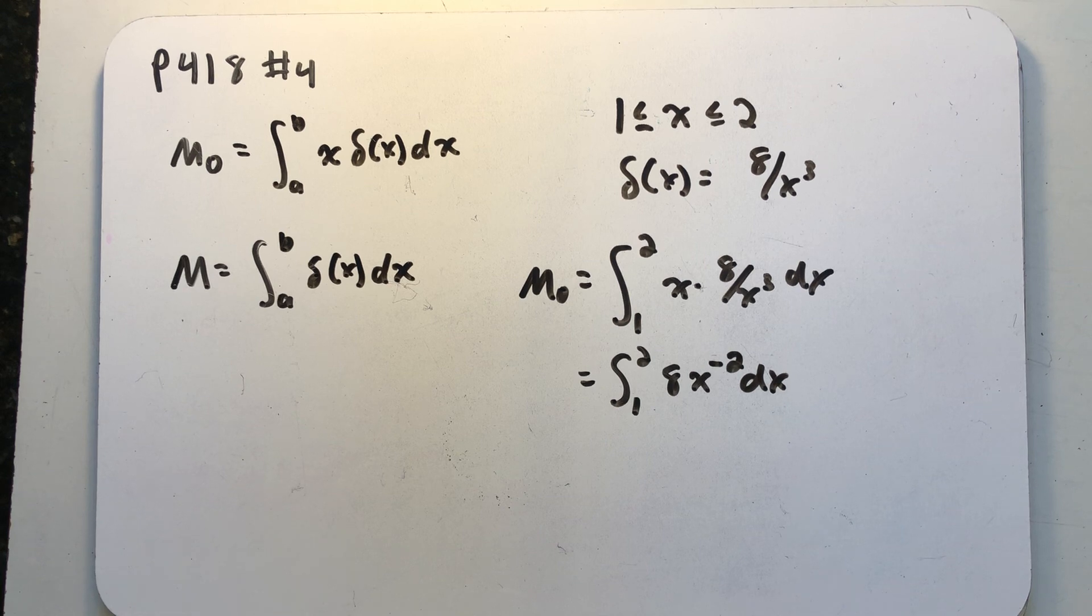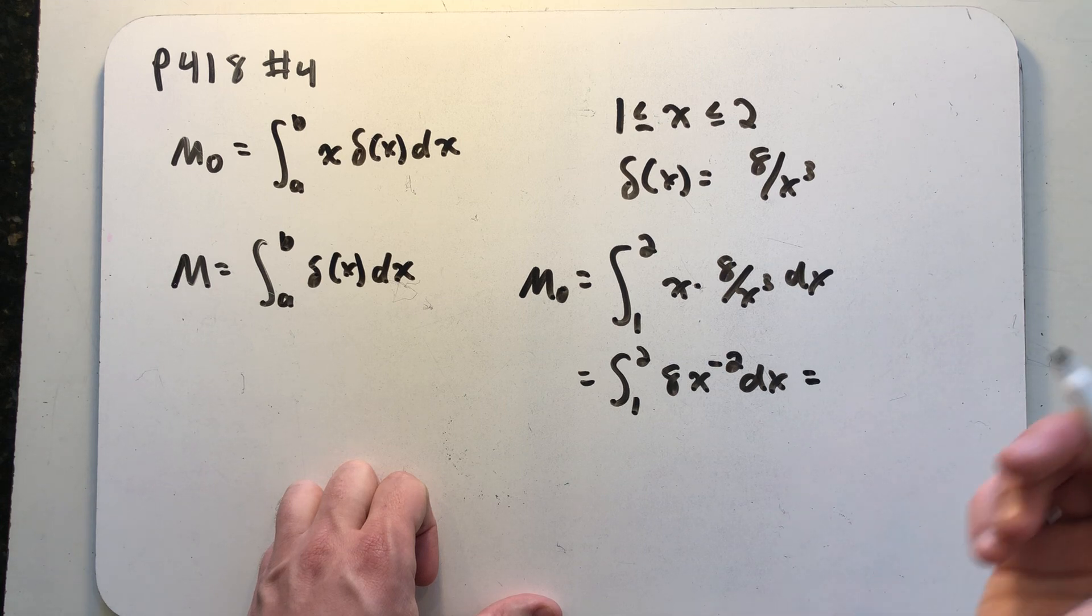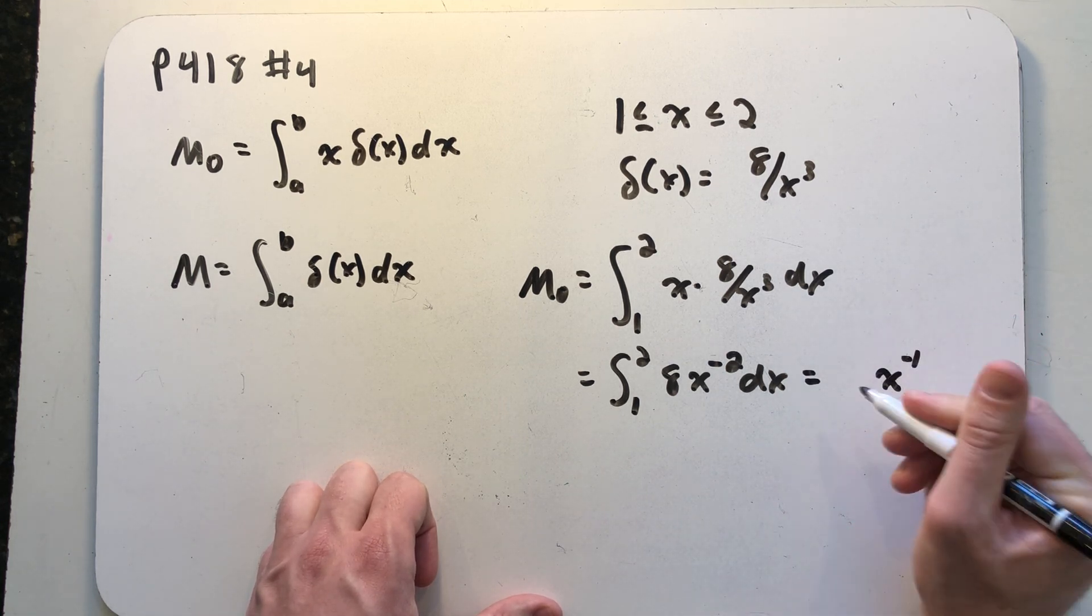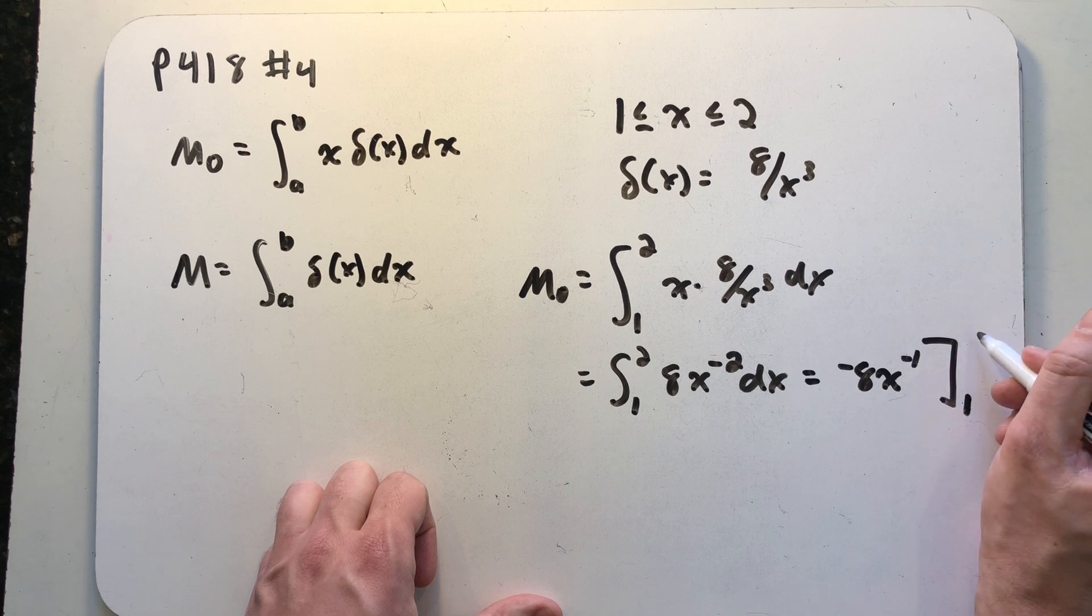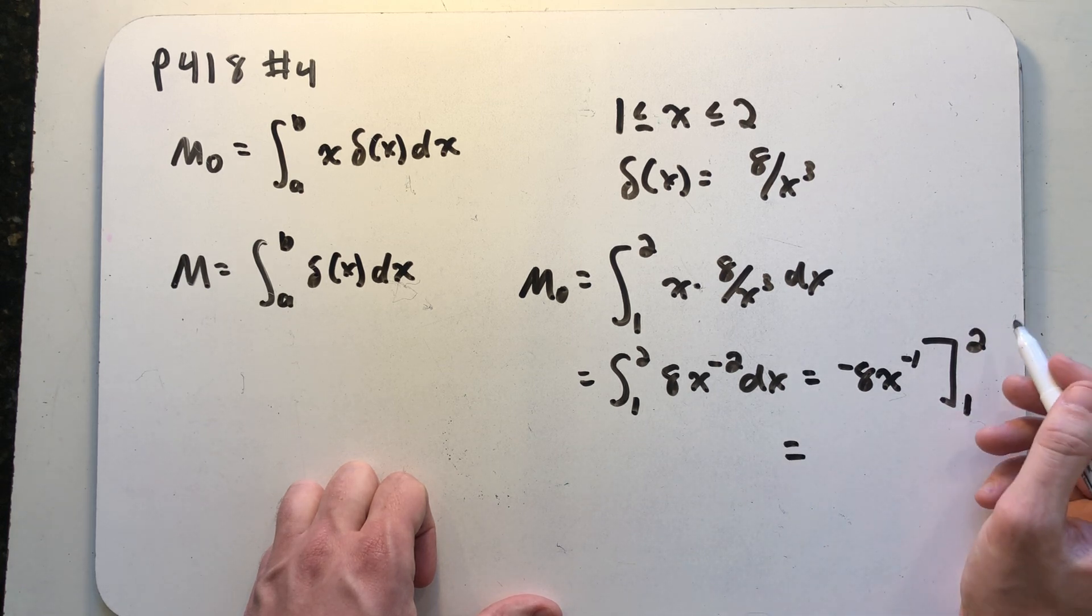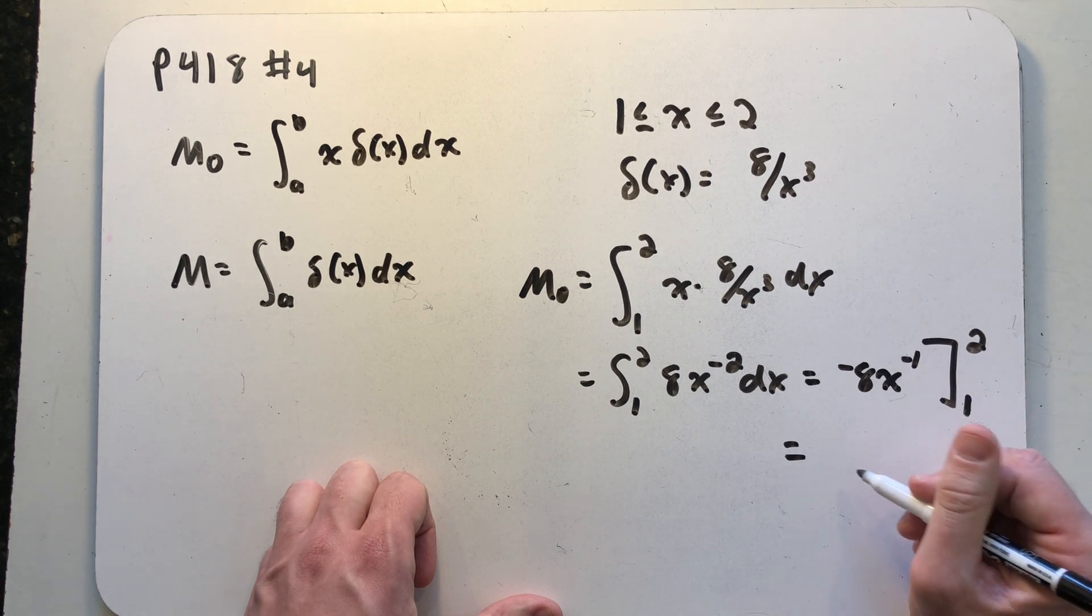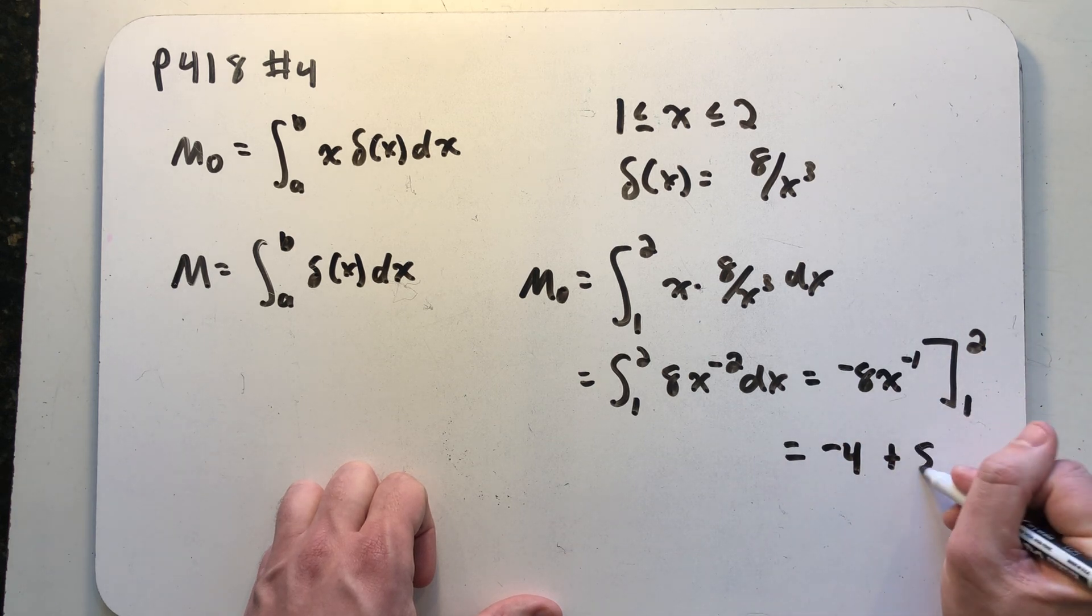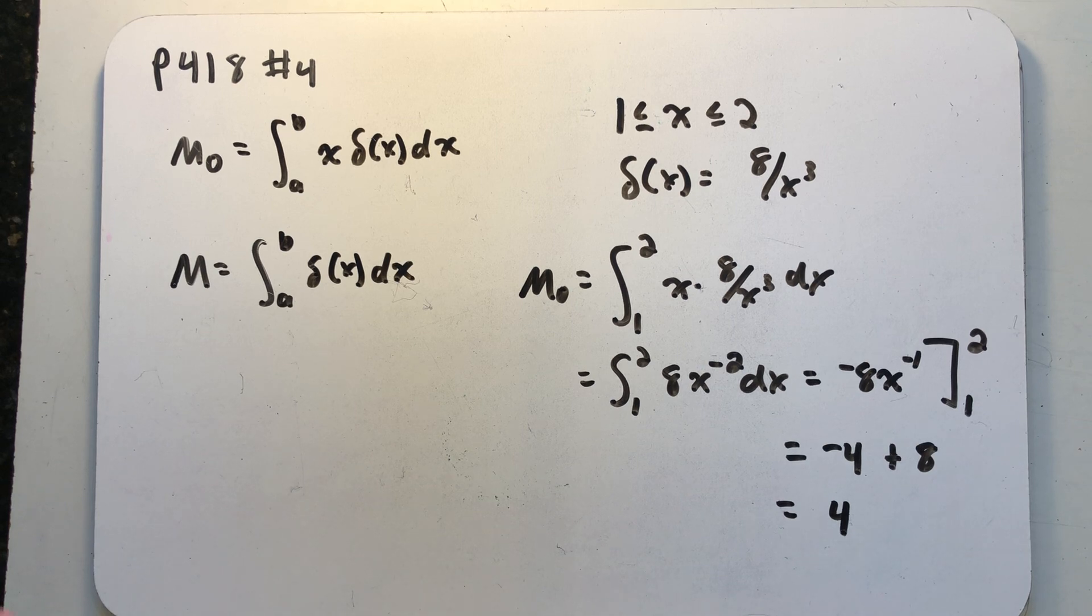Let's go on and find m naught, the moment about the origin. We'll go on and find an anti-derivative. Adding 1 to the exponent would give me x to the minus 1, making this a minus 8 out front. And we need to evaluate from 1 to 2. So let's see, I have a minus 8 over 2 is minus 4, plus minus a minus 8. The moment about the origin is 4.